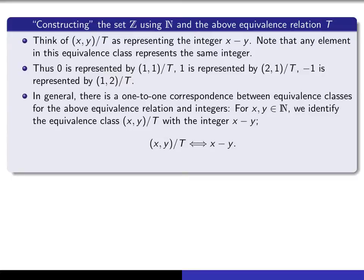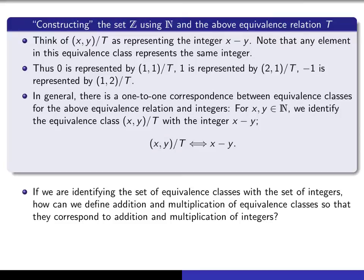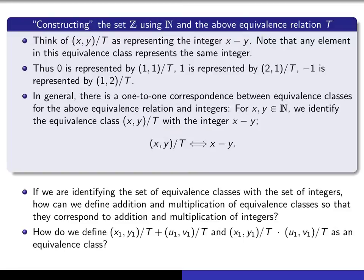In general, there's a one-to-one correspondence between equivalence classes and integers. We associate to the equivalence class of (x, y) the integer x minus y. Now that we've represented the set of integers in terms of equivalence classes, we also have the operations of addition and multiplication on the integers. The question is: how can we associate addition and multiplication to equivalence classes so that the corresponding integers give the same result?